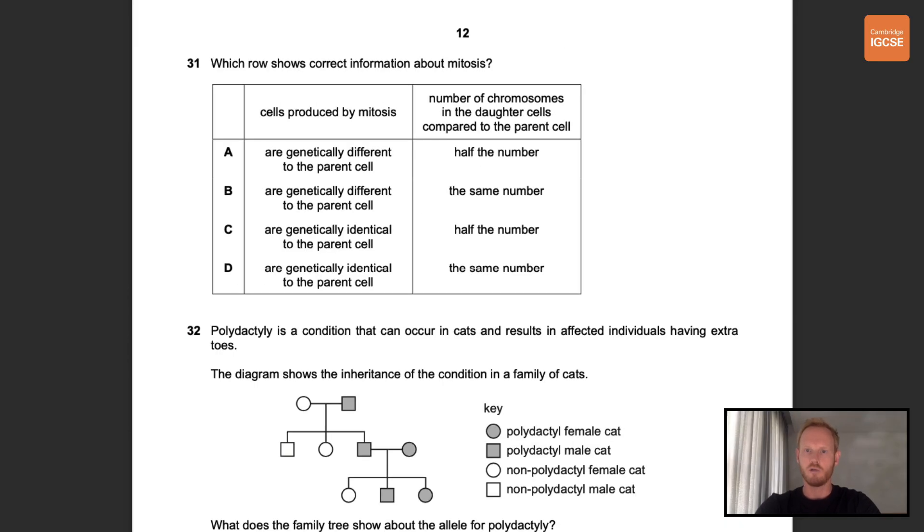Number 31. Which row shows the correct information about mitosis? So mitosis can be defined as nuclear division giving rise to genetically identical cells. The exact replication of chromosomes occurs before mitosis, so daughter cells have the same number of chromosomes as the parent cell. The correct answer here is therefore D.